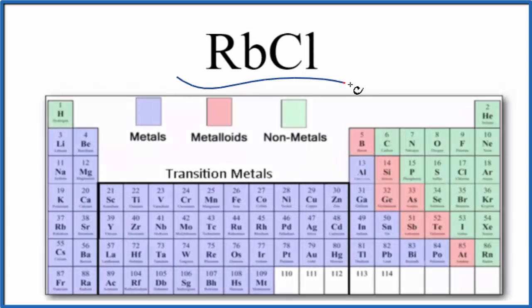The question is whether RbCl, this is rubidium chloride, is ionic or covalent. The short answer is that rubidium chloride is an ionic compound.